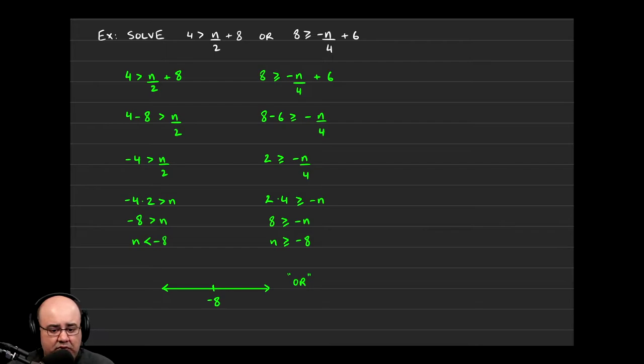So this gives us two solutions. n is less than negative 8. So let's graph that one first. I'm going to do that one in white. Less than means open circle and then to the left.